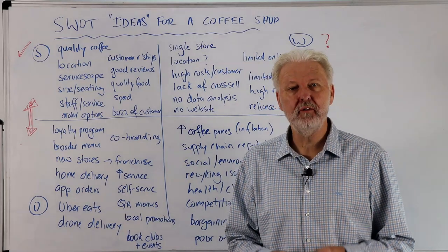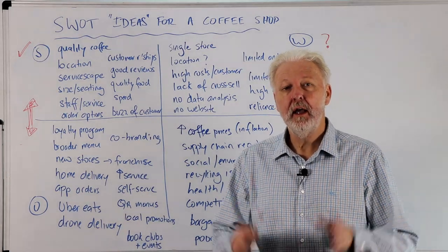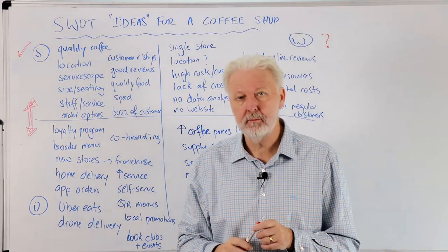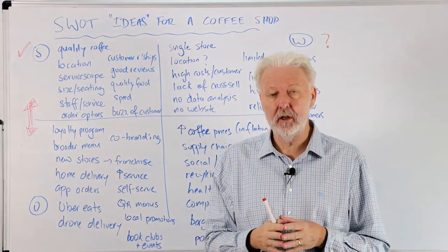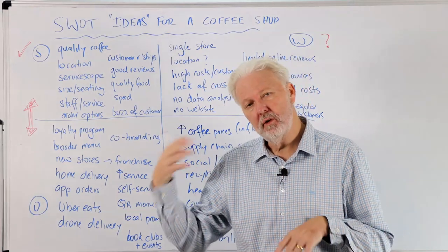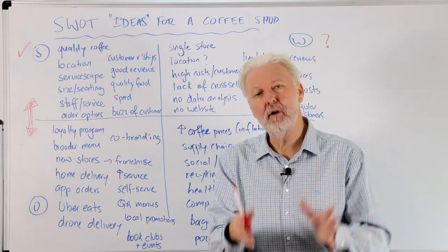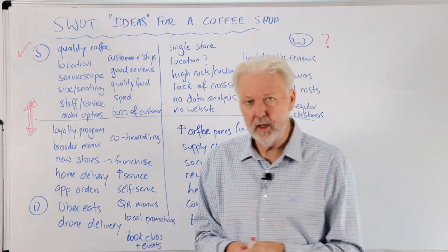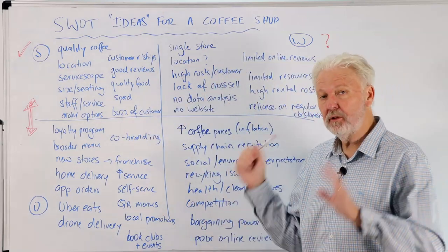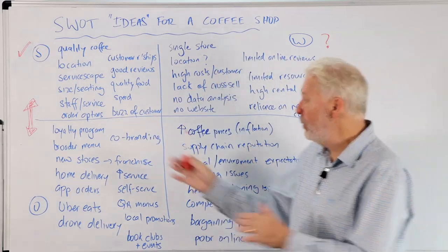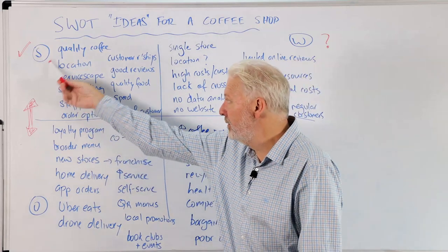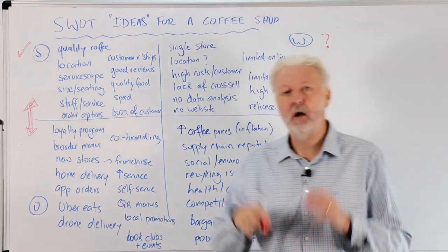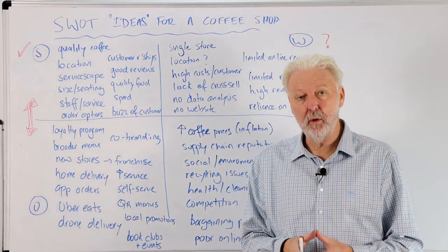Hello again and welcome to another video from the Marketing Study Guide. In this video I'm going to have a look at some SWOT ideas for a local coffee shop. Keep in mind these are just ideas — you look at them, use some of them, modify some of them, and then build them into your SWOT for the business you're looking at. I'm assuming we know what a SWOT is, so I'm not going to cover that again. What I have on the board is strengths, weaknesses, opportunities, and threats, and I'll go through each of the points fairly quickly.